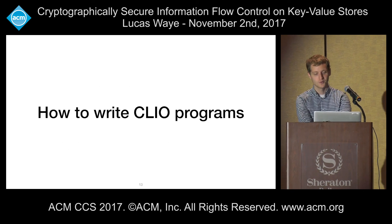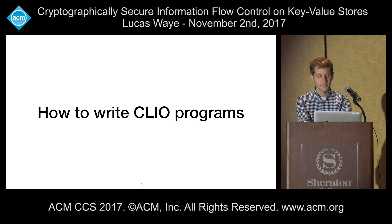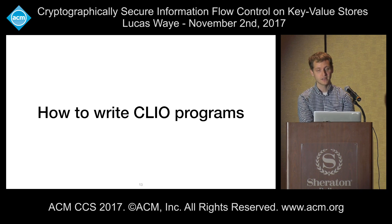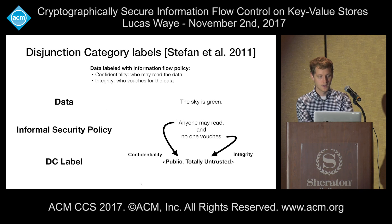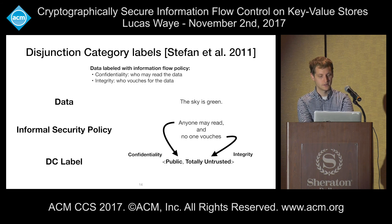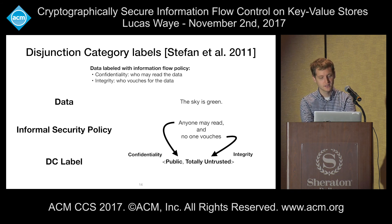Let's first talk about how a programmer would write a Clio program. The key to writing a program is understanding how data is labeled with security requirements, because these security labels are going to be the specification for how Clio uses cryptography. Clio uses disjunction category labels, or DC labels for short, and data is labeled with an information flow policy. This policy is broken into two components: the confidentiality of the data and the integrity of the data.